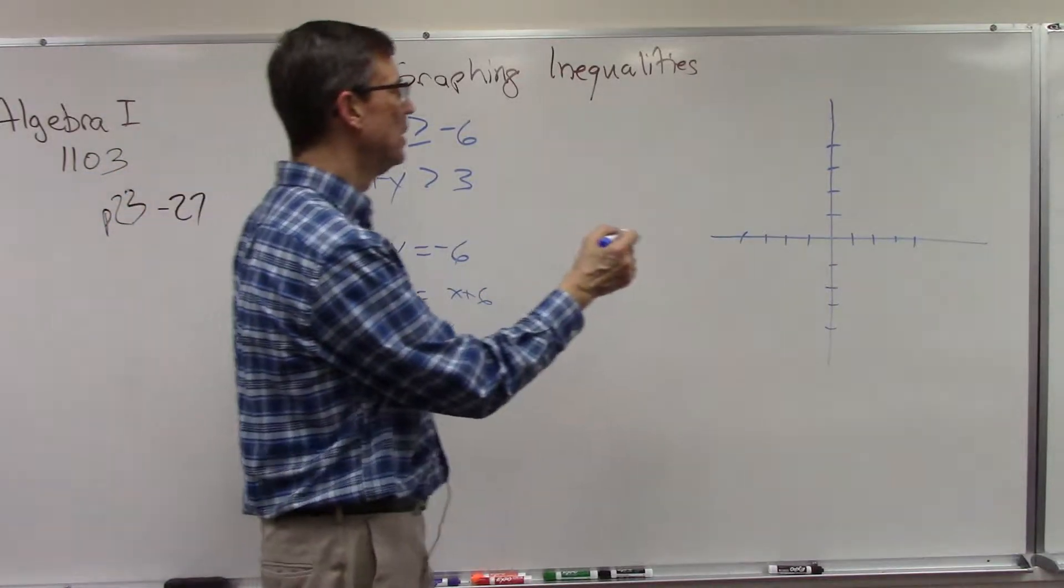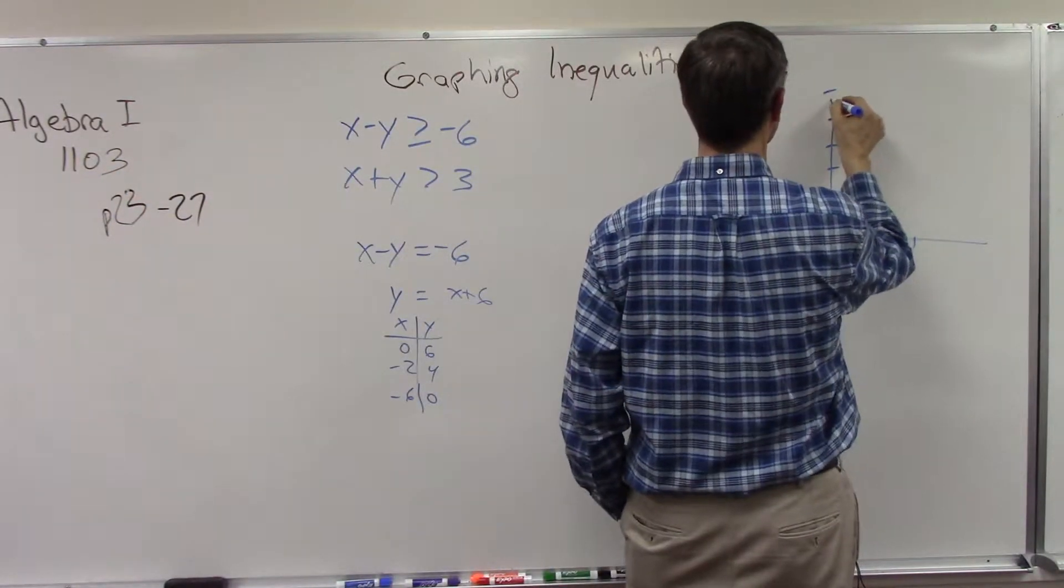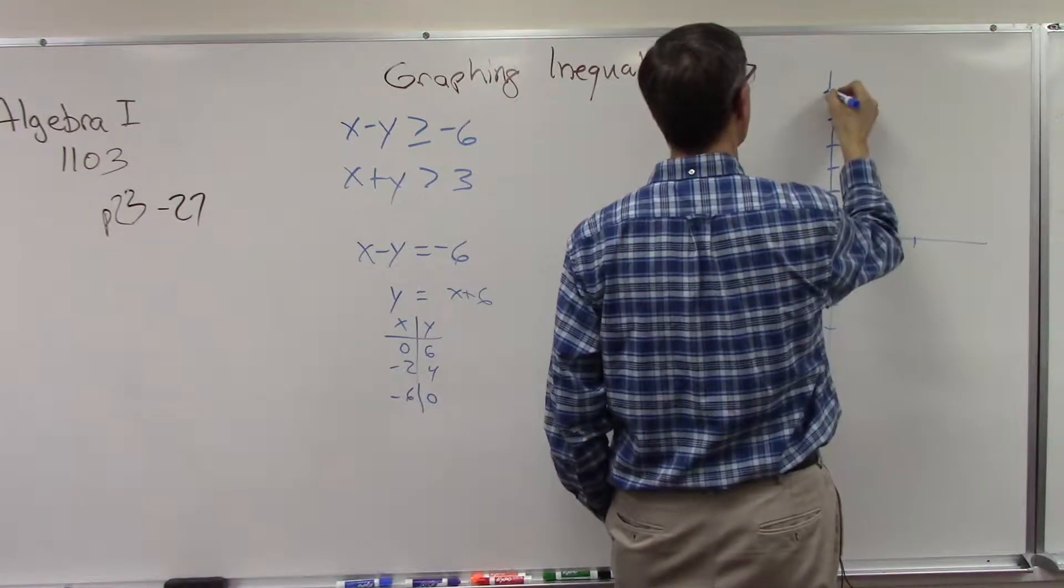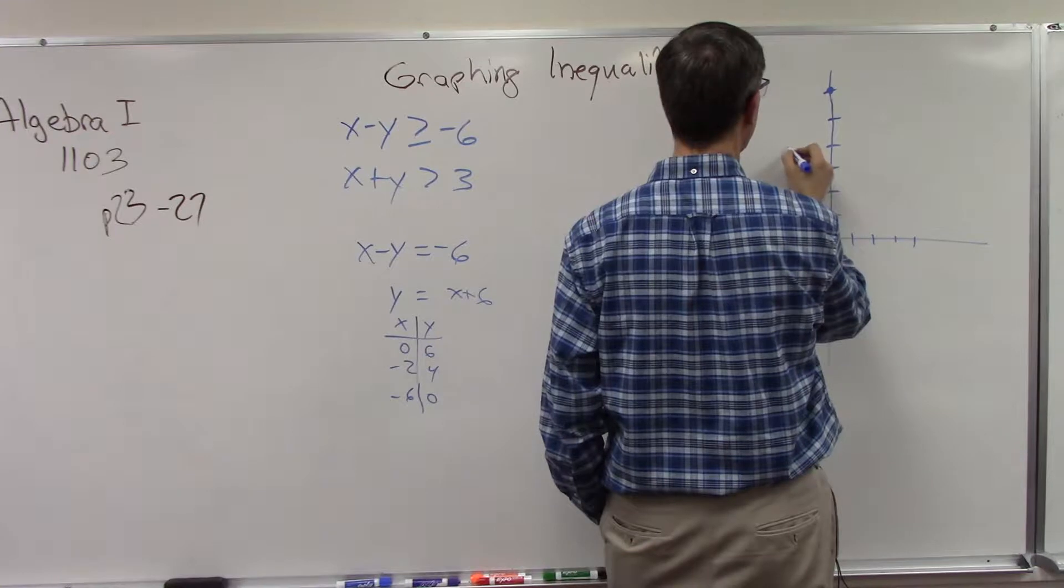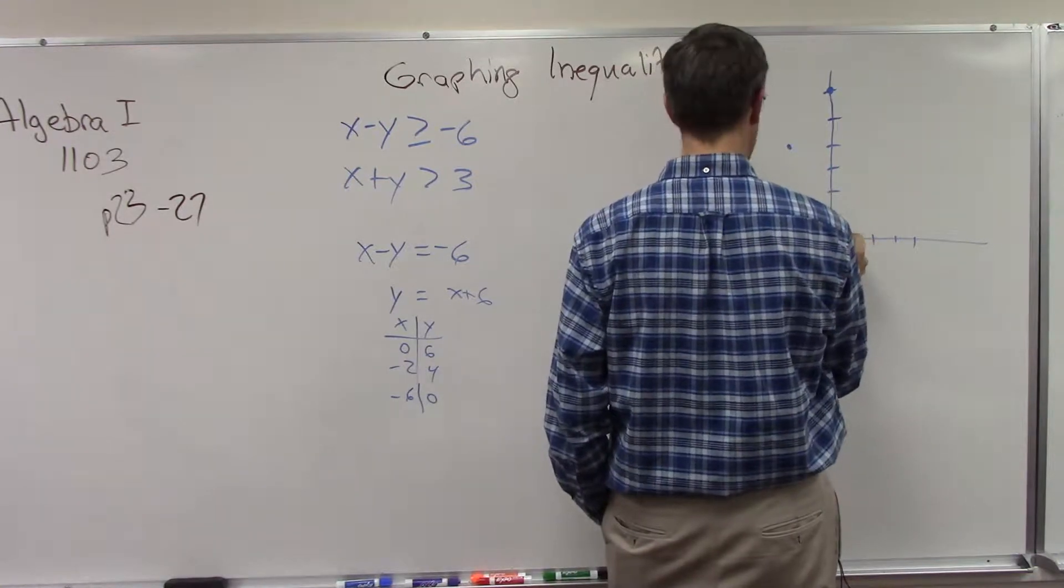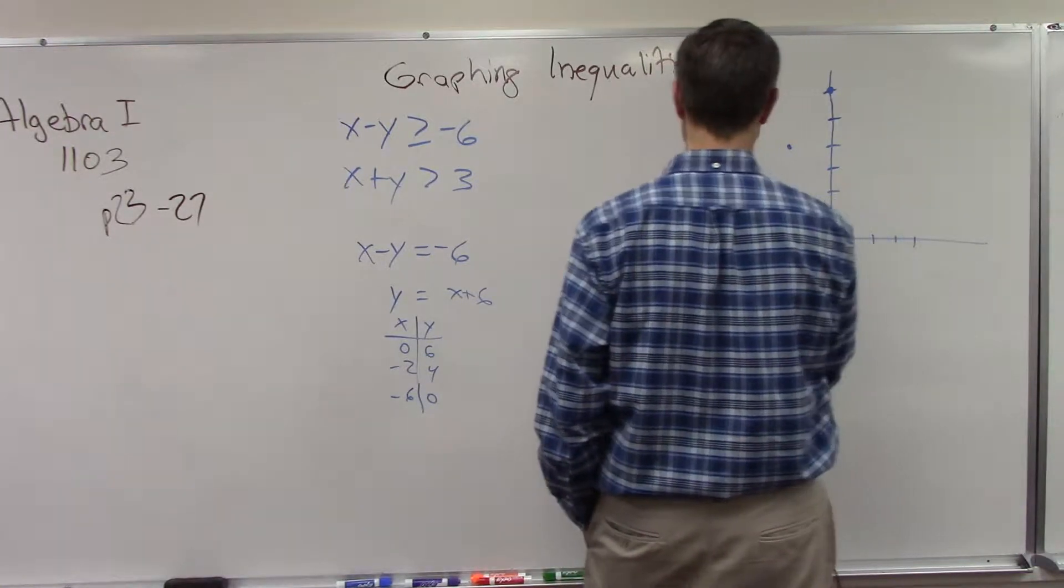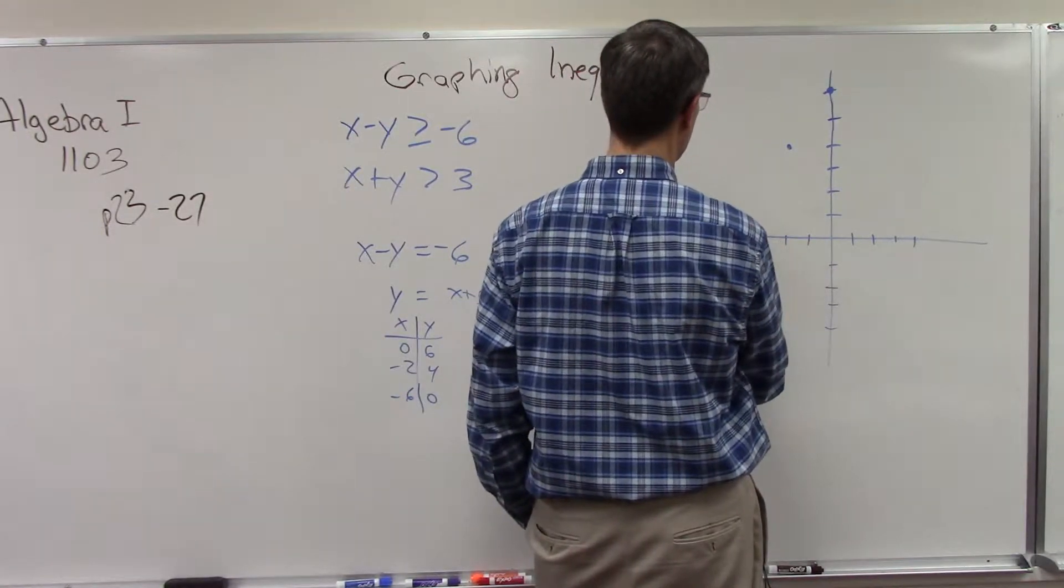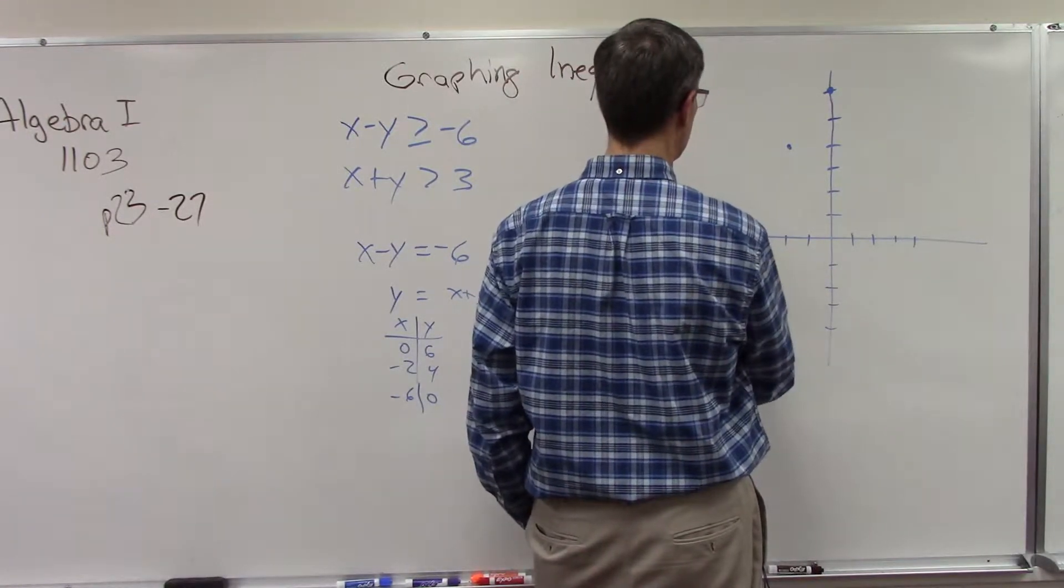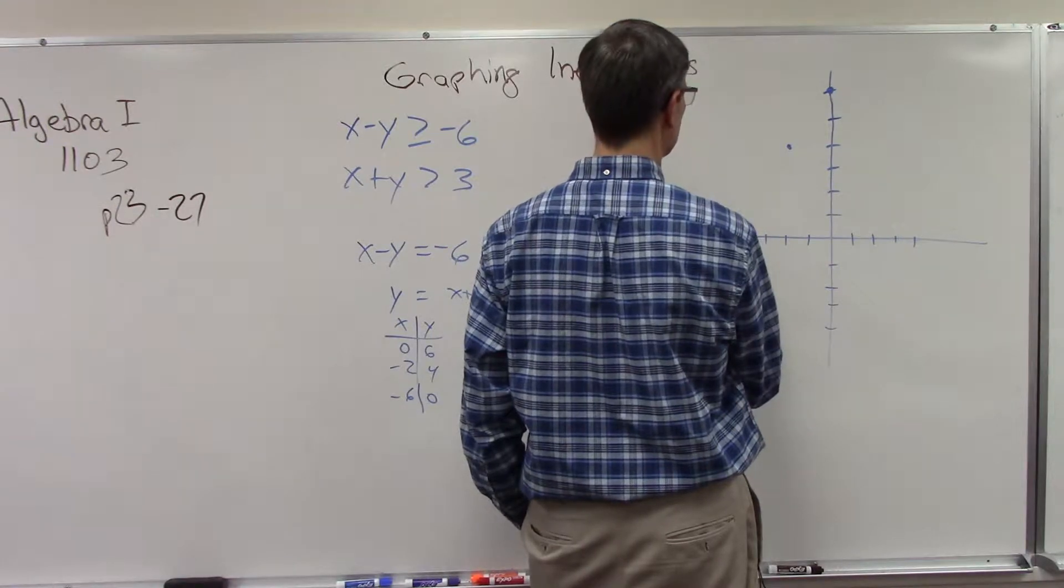Now I can come over here and say alright, at zero I'm at the point six, at negative two I'm up here at four, and then at negative six I'm at zero. One, two, three, four, five, six.